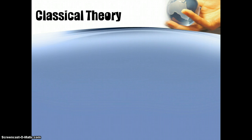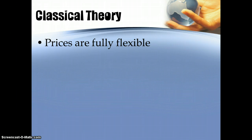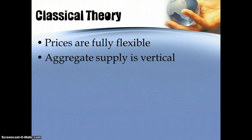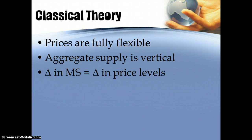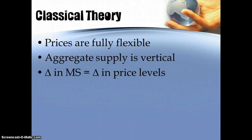We begin with the classical theory in economics, that prices are fully flexible in the long run and, therefore, aggregate supply is a vertical line. Any change in fiscal and monetary policy leads not to a change in output but simply to a change in price levels. A change in money supply leads to an equal change in price levels, and a change in fiscal policy will eventually lead to the same output as before but with higher price levels as well.